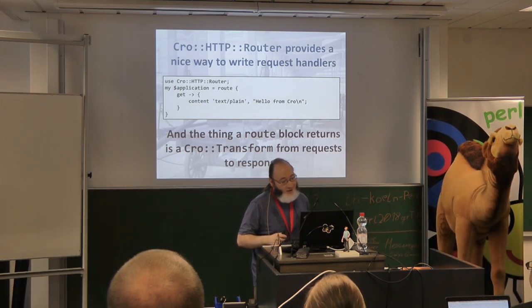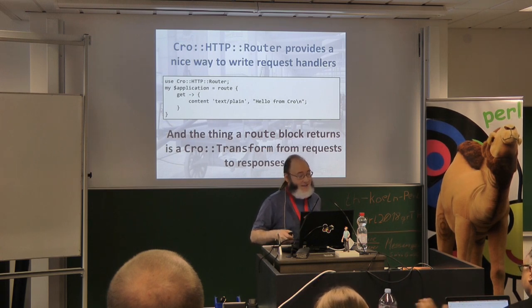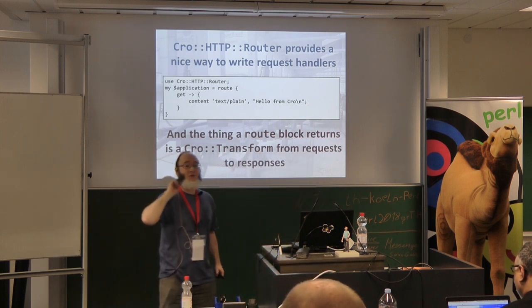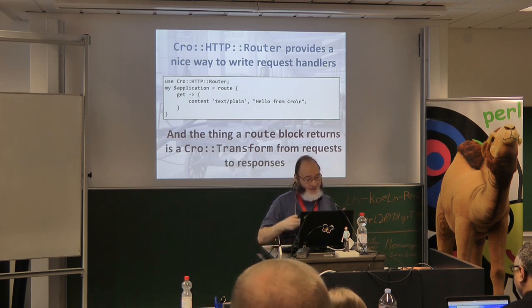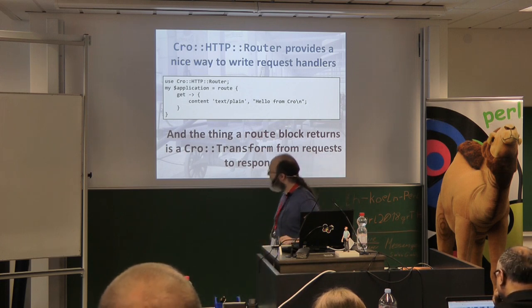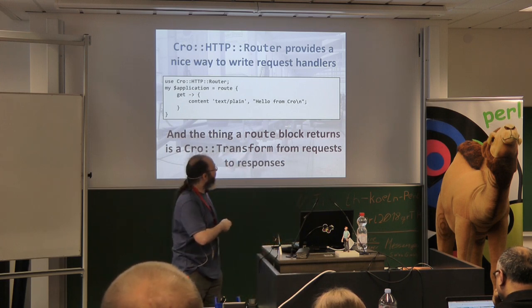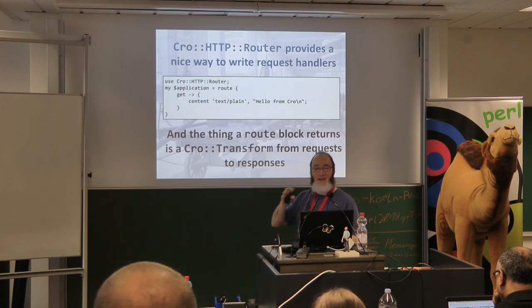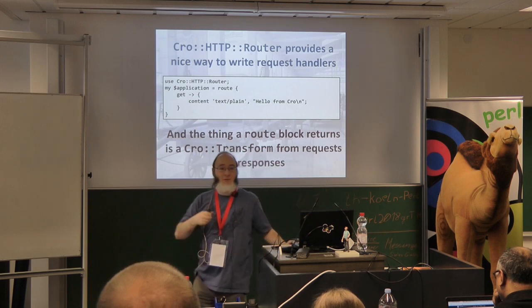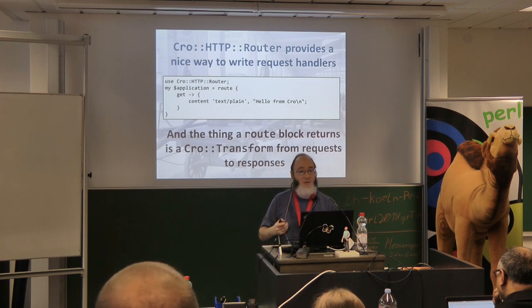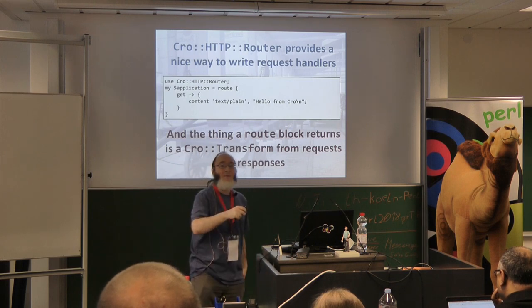How do we write request handlers? That's where 'Crow::HTTP::Router' comes in. We say: when there's a GET to the root path, respond with some content — text/plain with body 'Hello from Crow.' A route block also does the Crow transform role — it's a nicer way of building that. I thought about how we can use something Perl 6 does really well for routing, and realized we could use Perl 6 signatures, which are very powerful and also first-class objects we can introspect.